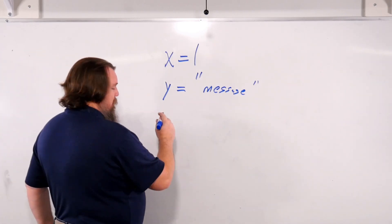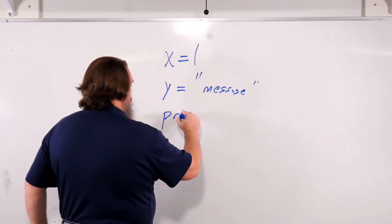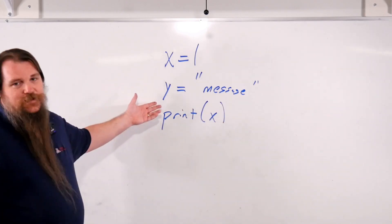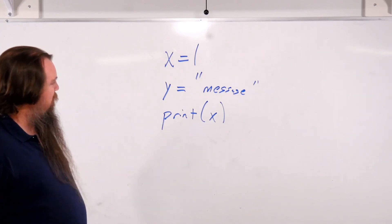How do we print things out? We can call the print function. We can pass it x, we can pass it y, we can pass whatever expression we want.